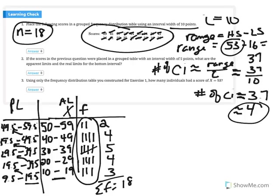The next question asks us to consider a class interval of 5, so i equals 5. What will that do to the number of class intervals needed? Given i equals 10, we needed five class intervals. If we decrease the class interval size to 5, the ranges are smaller, so we're going to need more class intervals. By decreasing the class interval size, we increase the number of class intervals needed, which may get us closer to the ideal number of 10.